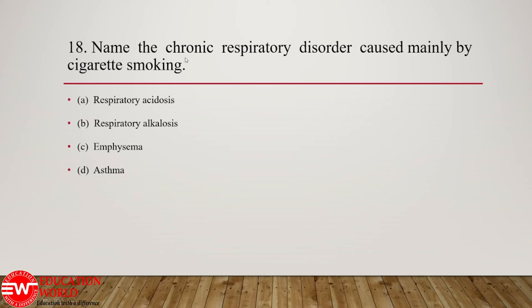Question number 18: name the chronic respiratory disorder caused mainly by cigarette smoking. The disease is known as emphysema. Emphysema is a chronic obstructive pulmonary disease (COPD) caused by cigarette smoking. It is an inflammation or abnormal distension of bronchioles or alveoli of the lungs, causing irreversible distension and loss of elasticity of the lungs.